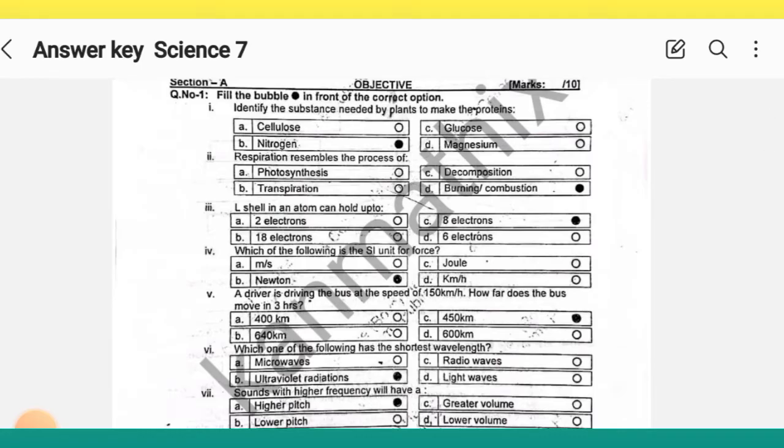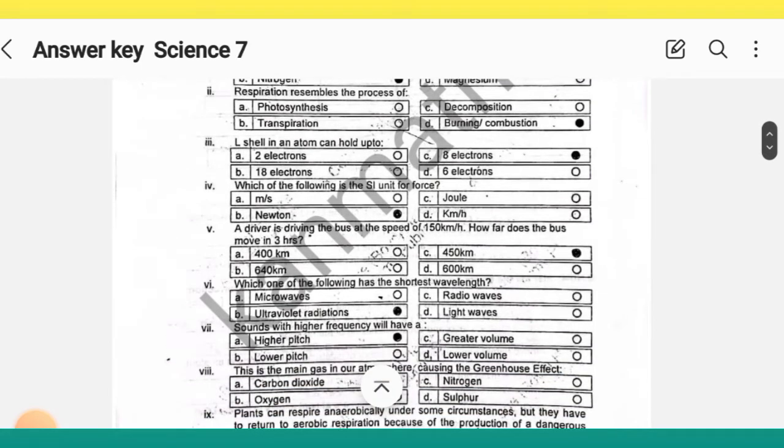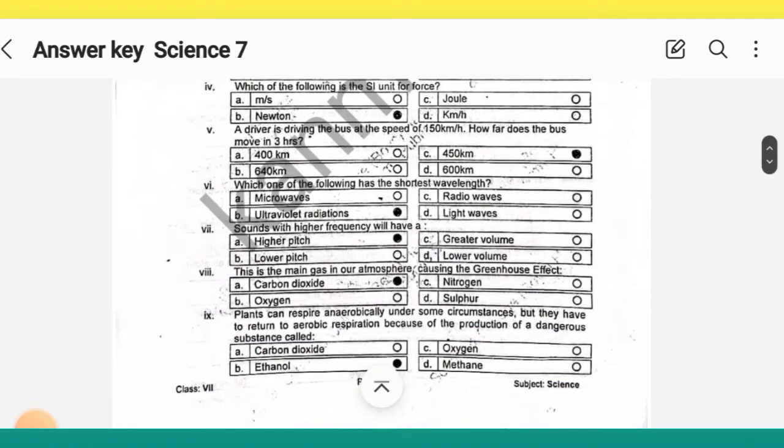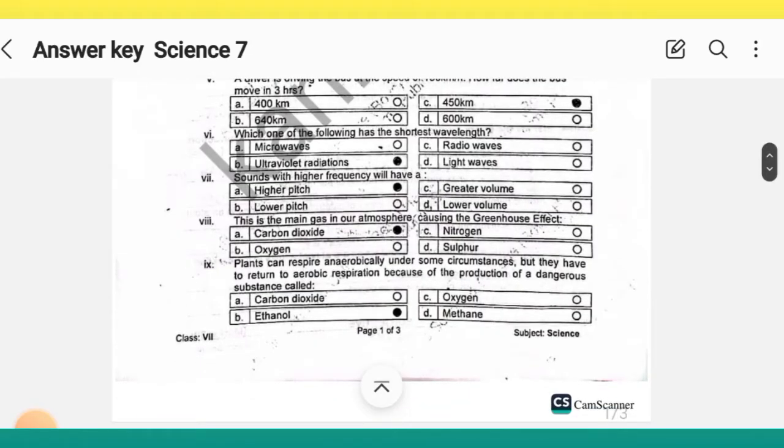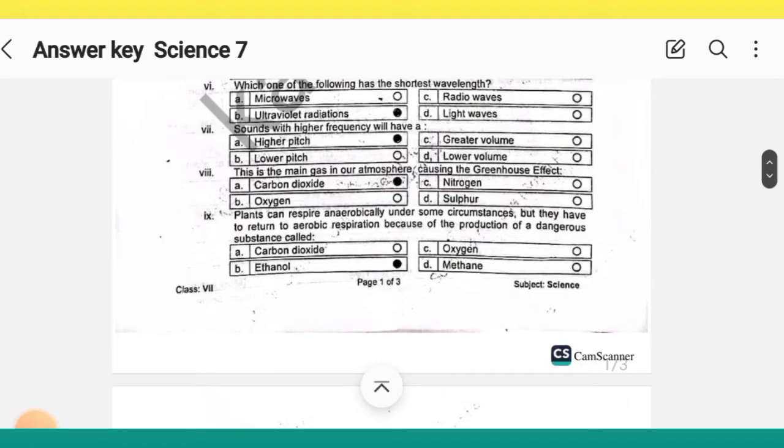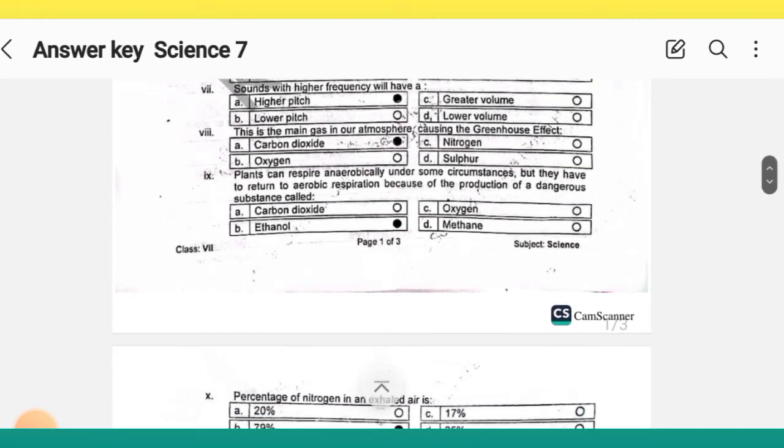MCQ 3 correct option is C, MCQ 4 correct option is B, MCQ 5 correct option is C. MCQ 6 correct option is B, MCQ 7 correct option is A, MCQ 8 correct option is A, MCQ 9 correct option is B.